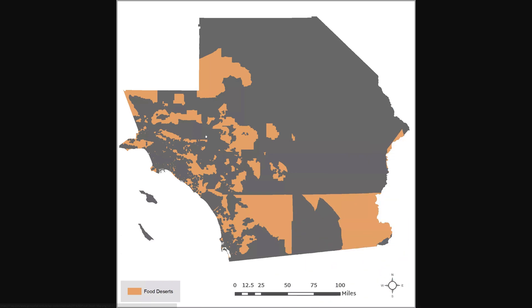The second map should be designed to communicate the location and extent of food deserts throughout the study area. In this example, a solid color was used to represent food deserts. Polygon outlines were removed for clarity.